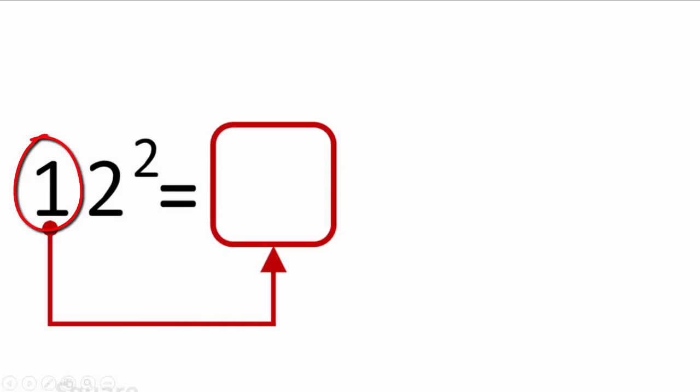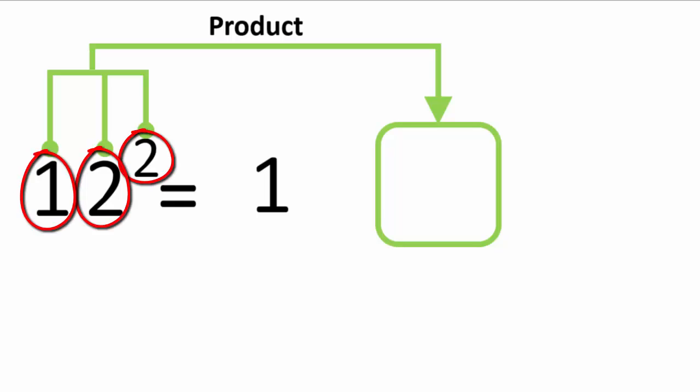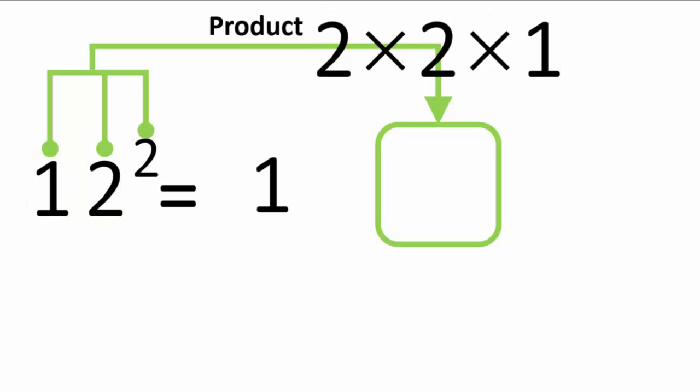First, you square this number here, and you get 1. Next, you calculate the product of the three numbers. So in this case, you have to do 2 times 2 times 1, and you get 4.